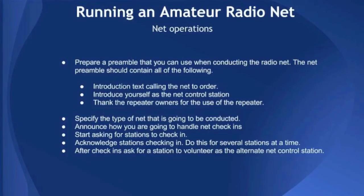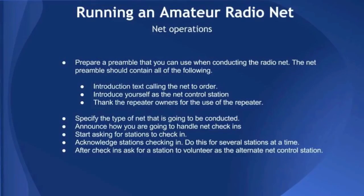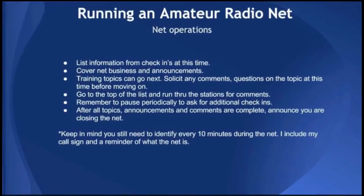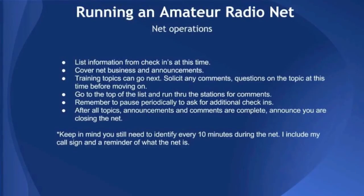We take those stations and then say: 'Stations from the state of Maryland for the CARES net this evening, please call N3LUD net control.' When acknowledging check-ins, you do this several stations at a time — every three or four stations, you acknowledge by reading back their call signs. After all stations are checked in, you'll solicit for an alternate net control station, prepared to take the net over if the primary net control station drops off the air. Then we list any information that check-ins had at that time.